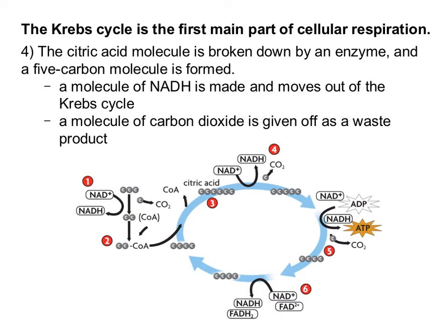The citric acid molecule is going to get broken down and you can see there is a release of carbon dioxide — that's the second carbon dioxide released; the first one was back in step one. Also, some of the electrons from that step are going to be loaded up onto NAD to form NADH. This is the second time we're seeing NADH being formed — it was also formed at step one — so that's two NADHs loaded up with electrons so far.